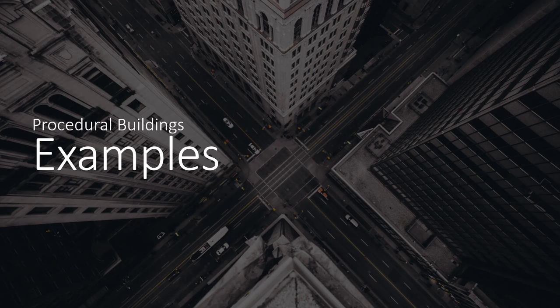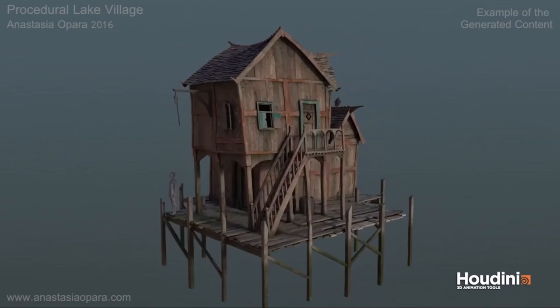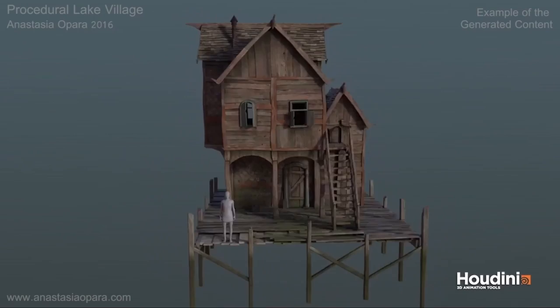I will show you some examples in case you are not that familiar with procedural buildings. The first example is already quite well-known — it's from Anastasia. She made a procedural lake house a couple years ago and it still holds up really well today. It's a great example of how we can make procedural buildings in Houdini with a unique style, shapes, and forms.